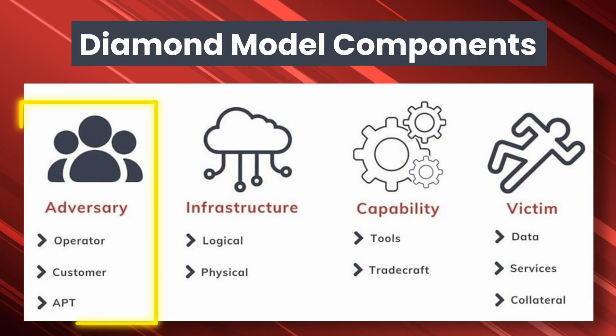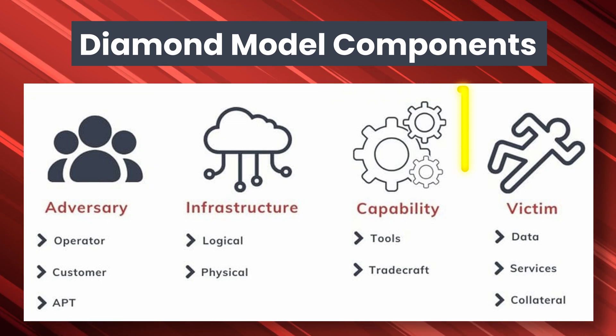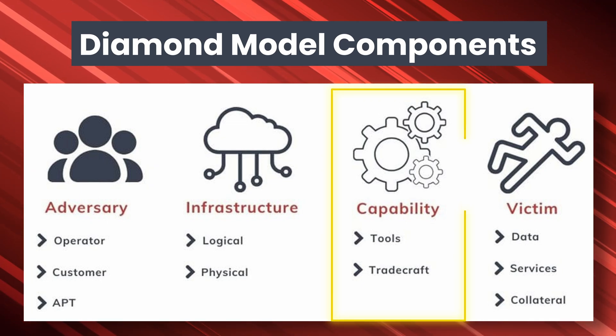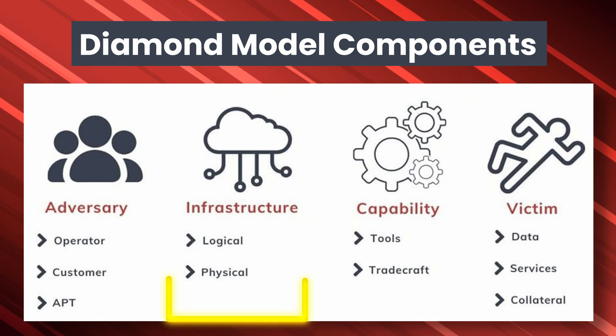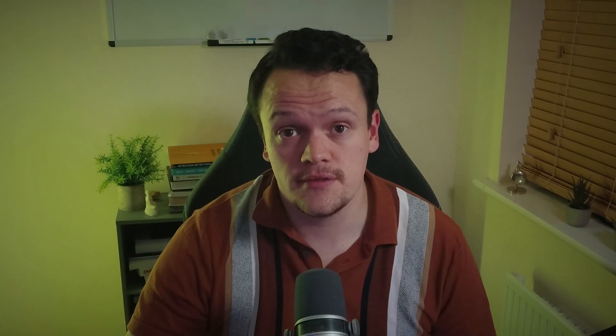The Diamond Model is a simple framework for analysing and understanding cyber threats. Defenders use it to organise and structure their intrusion analysis by categorising data into one of its four components: adversary — who did the attack; capability — how did they do it; victim — who was the target; and infrastructure — what was used to perform the attack. These four components are present in every cyber attack and relate to one another.